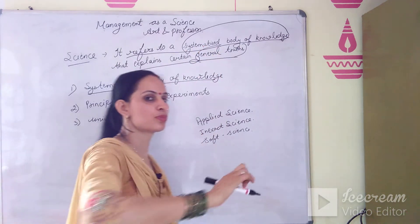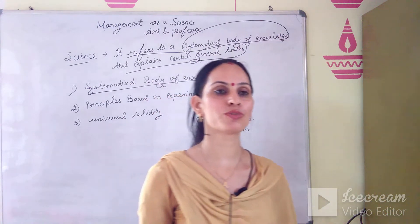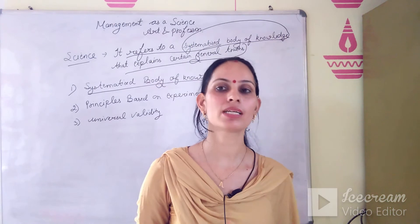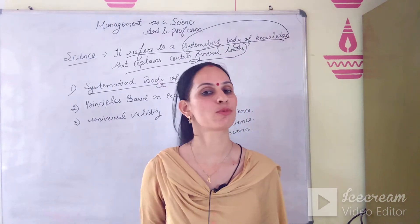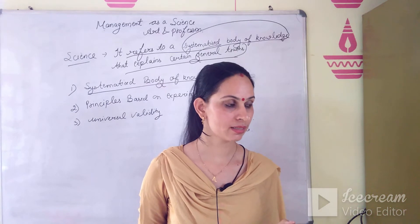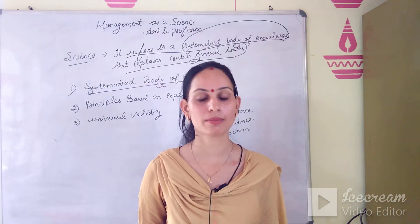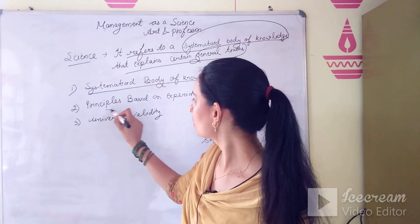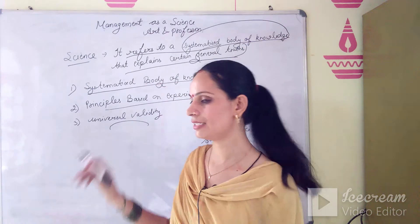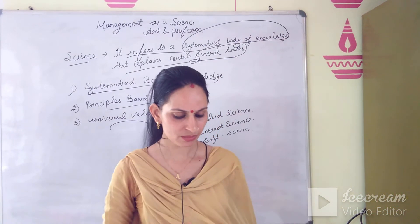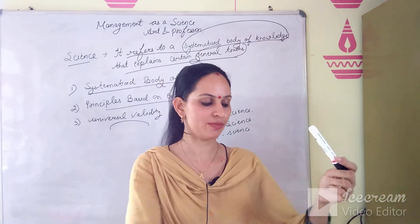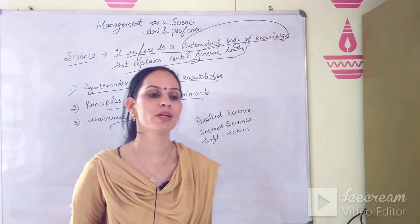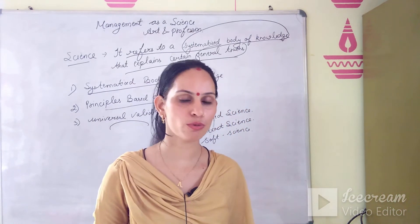The second characteristic is that the principles of science are based on experiments. When we establish a principle in science, we first conduct experiments and then formulate the principle — for example, carbon dioxide is made from carbon and oxygen, and this principle is based on experiments. The third characteristic is universal validity: these principles are universal and valid everywhere. You can apply them in any form, at any place, and they will remain unchanged.